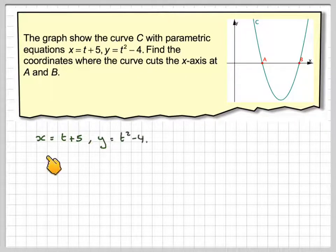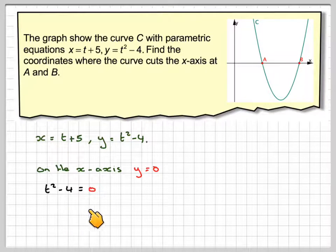Write down the parametric equations: x equals t plus 5, y equals t squared minus 4. On the x-axis, y equals 0, so we can set t squared minus 4 equal to 0.